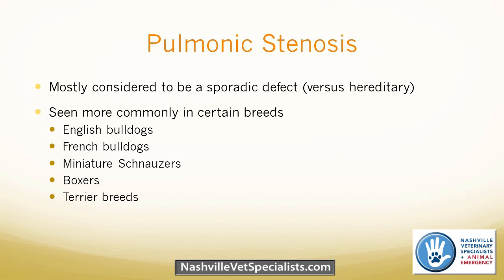Pulmonic stenosis is mostly considered a sporadic defect rather than hereditary. If a breeder has one dog with pulmonic stenosis, it doesn't necessarily indicate bad breeding, and it doesn't necessarily mean the dam and sire cannot breed again — though we don't want to breed the affected animal. Pulmonic stenosis is seen more commonly in certain breeds: English bulldogs, French bulldogs, miniature schnauzers, boxers, and terrier breeds. I also see it frequently in pit bulls and mixes, and occasionally in Cavalier King Charles Spaniels.